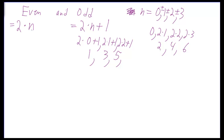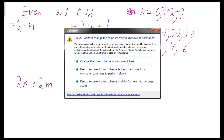Now, if we want to know what you get when you add an even number to an even number, what you can do is this: it's got to be in the form of 2n plus 2m. I'm using m instead of n so it doesn't mean it's exactly the same number. m is allowed to be the same sort of values: 0, negative 1, positive 1, and so on.